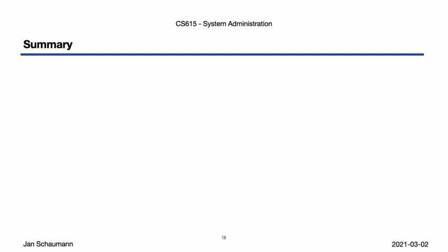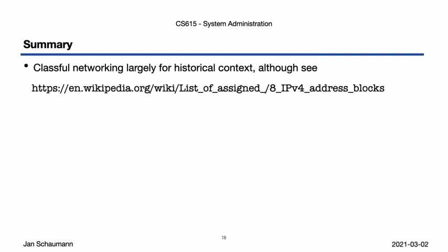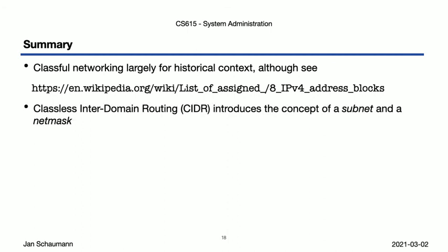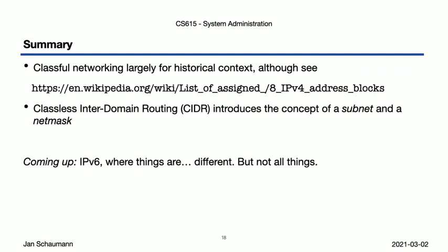In this video, we briefly mentioned the historical context of classful networking — no longer used, but still useful to understand. We then talked about dividing a network into smaller networks, i.e. subnets, through the use of a netmask, and identified the different logical steps in this process. All this applies to IPv4, but what about IPv6? We'll talk about that in our next video — things are quite different in the IPv6 world, but not entirely different. Thanks for watching. Cheers.